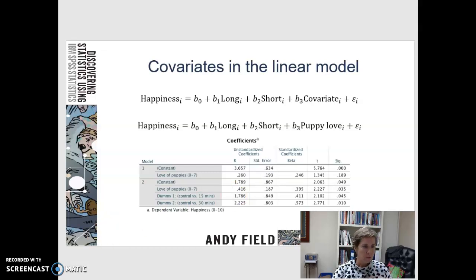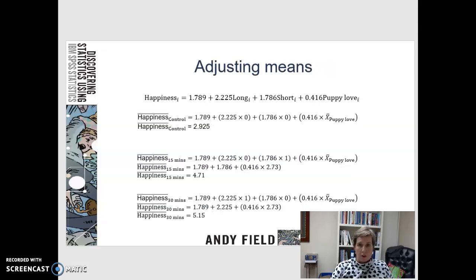So here are our equations. Here I've got my prediction equation: 1.789 plus 2.225 long, 1.786 short, and 0.416 times puppy love.